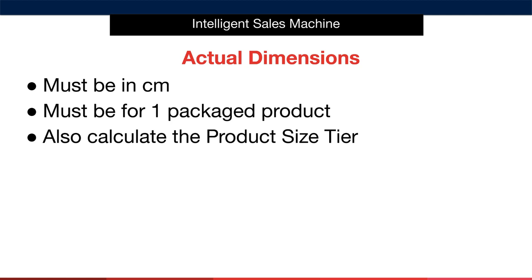For quick reference, if you're given dimensions in metres, simply multiply each number by 100. If given in inches, multiply by 2.54. Also, calculate the product size tier within Amazon. This is Amazon's classification of the size of your product in their FBA system. The size of your product will affect how much you pay to store and ship the item with Amazon. Let's take a look at how to classify your item with the dimensions you've received.